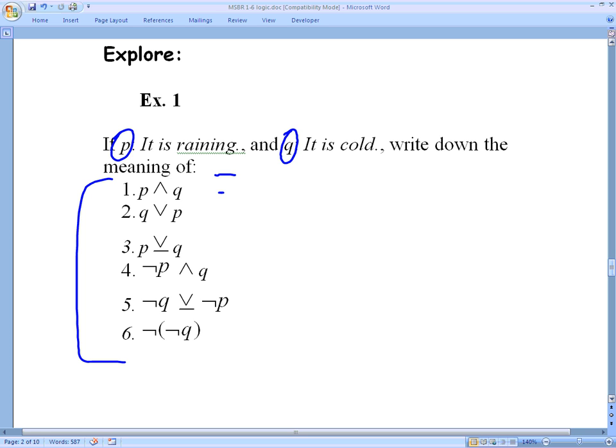So the first one, it is raining. Then I have this symbol, which means, and it is cold. Compound sentence. I should use a comma because I have two different independent clauses, each with their own subject and verbs and all that good stuff. So that would be the appropriate way to do that.